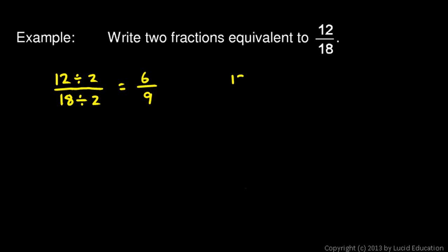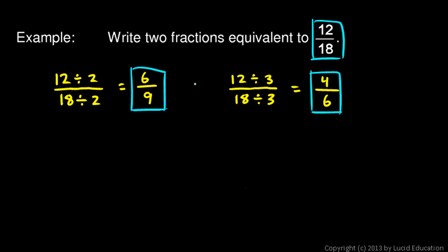Let's find another. 12 over 18, and let's extend the fraction bar and divide them both. Let's find another number. 12 and 18 are also both divisible by 3. In the numerator, 12 divided by 3 gives me 4, and in the denominator, 18 divided by 3 gives me 6. So both of these, the 6/9 and the 4/6, are both equivalent to 12/18. All three of those fractions are mathematically equal to each other.